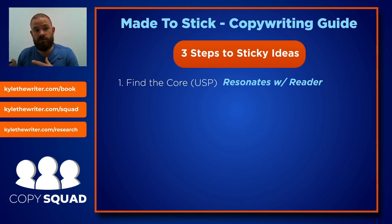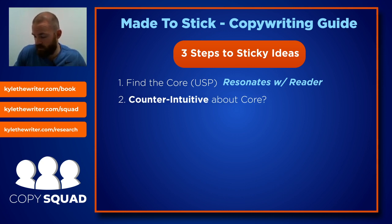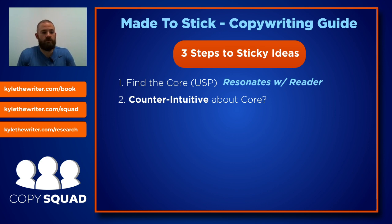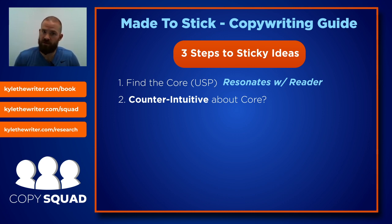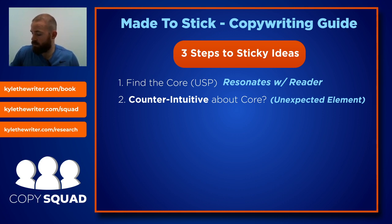Once you figure out what resonates with your reader, the second step is to find what is counterintuitive about the core. What part of your USP that resonates with your reader doesn't really logically seem sensible on the surface? If you dig a little deeper into your USP, what will you discover that will be sort of like a surprising, unexpected element?